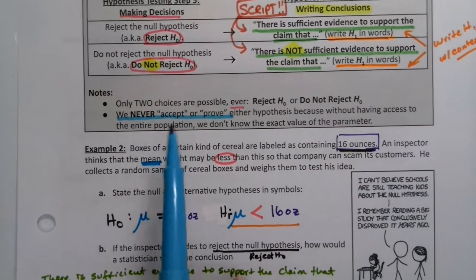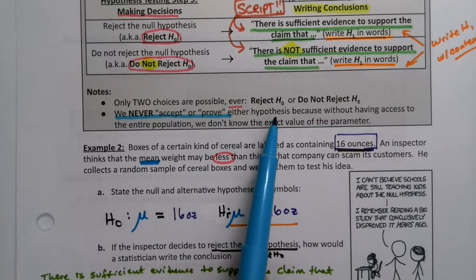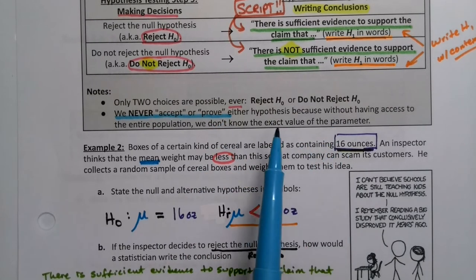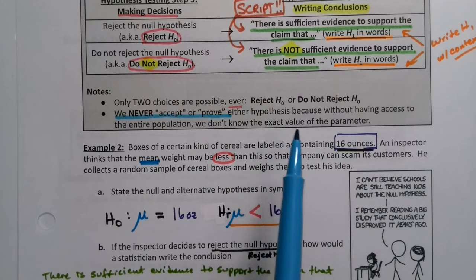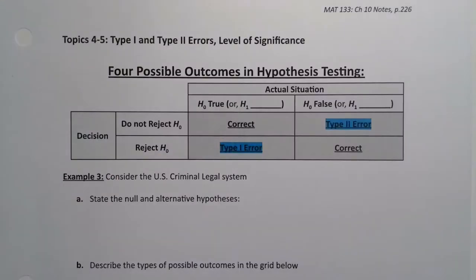On the previous page of notes, we mentioned that we never accept or prove either hypothesis because without having access to the entire population, we don't know the exact values of the parameter. So that means that when we make a decision, since we don't have access to the whole population, we could be making errors.